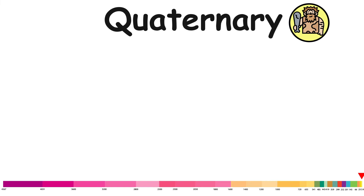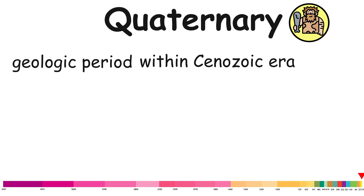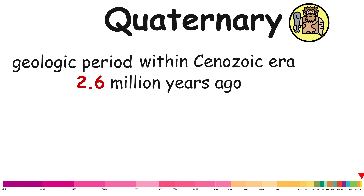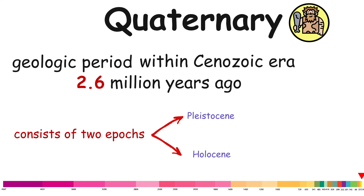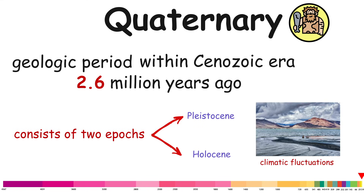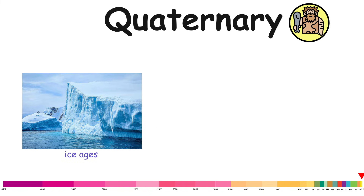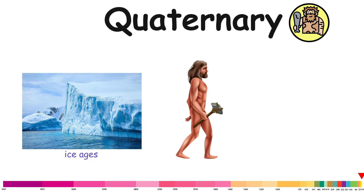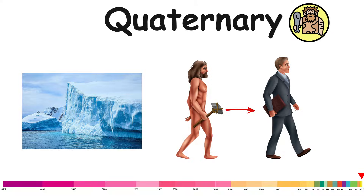Quaternary. The Quaternary is the most recent geologic period within the Cenozoic era, spanning approximately from 2.6 million years ago to the present day. It consists of two epochs: the Pleistocene and the Holocene. The Quaternary is marked by significant climatic fluctuations, the development of extensive ice ages, and the evolution and dominance of Homo sapiens — modern humans.